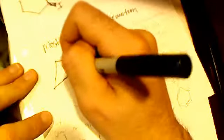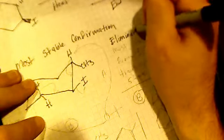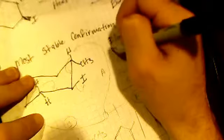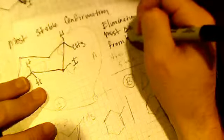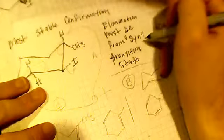We'll have CH3 equatorial down, we'll have I equatorial up. Now, in its most stable conformation, the elimination must be from syn. Syn transition state, or actually maybe like a syn hydrogen, a syn alpha hydrogen.